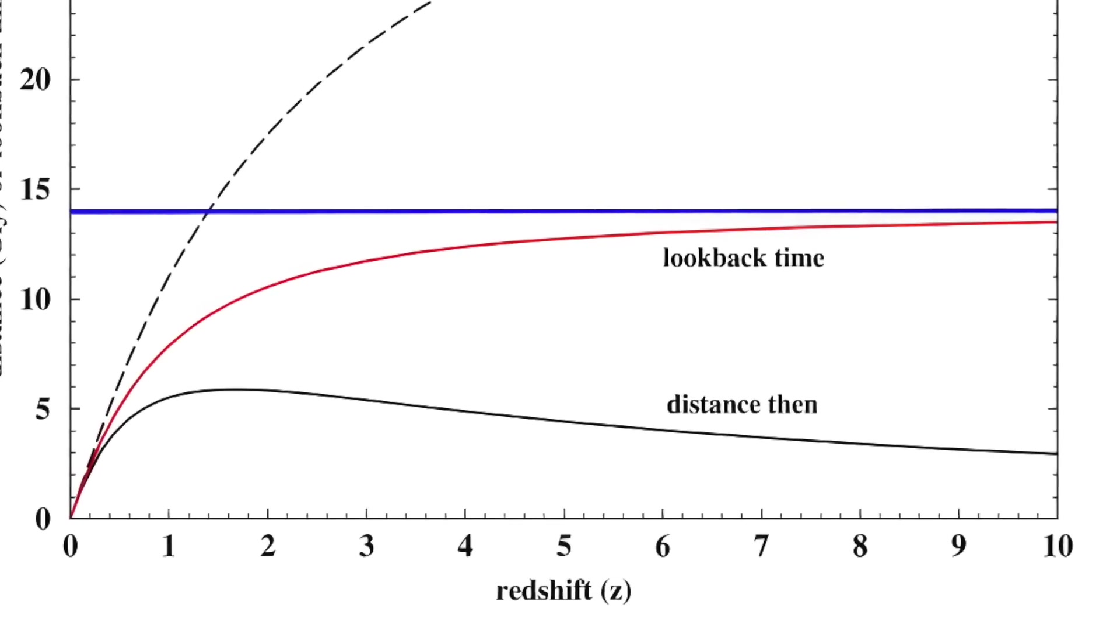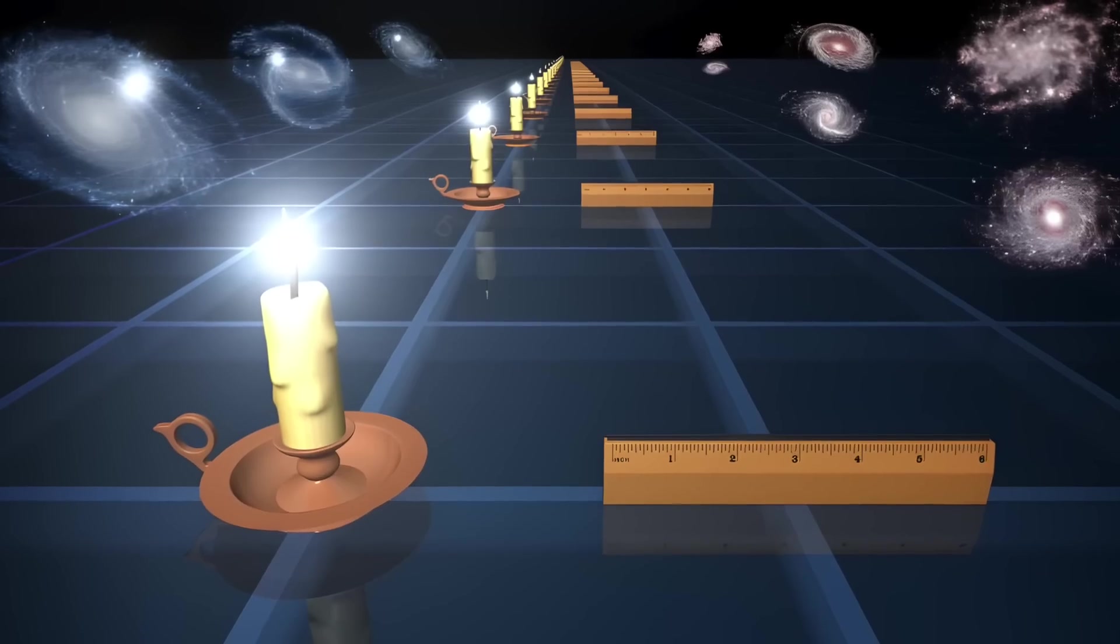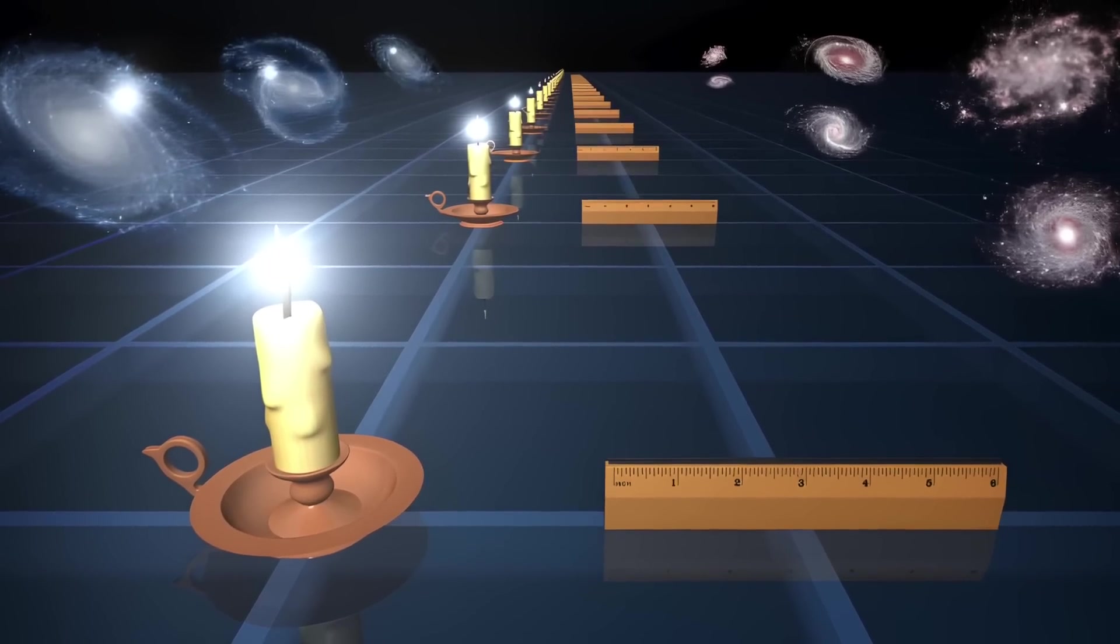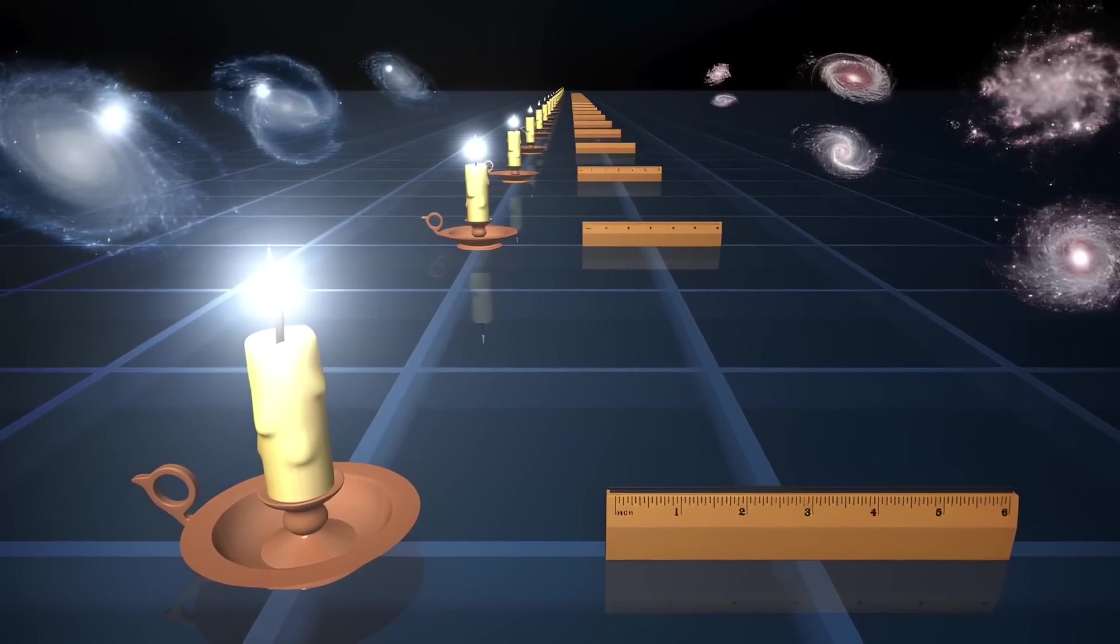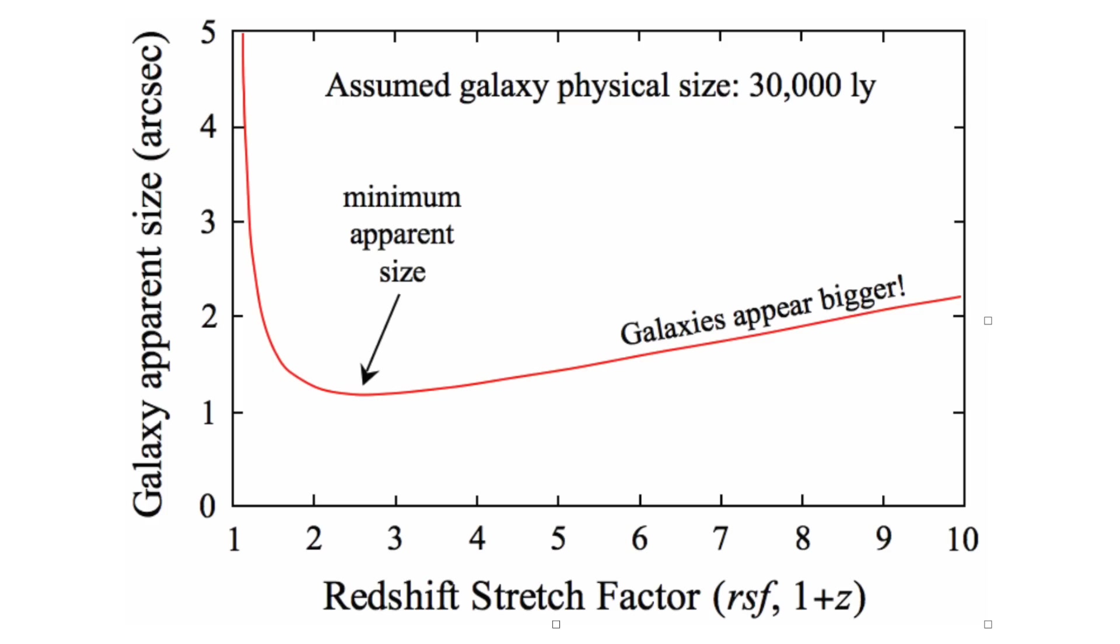In everyday life, we're used to the intuitive idea that the apparent size of objects, what astronomers refer to as their angular diameter, decreases as the distance to those objects increases. An object looks smaller as the distance of that object increases. In standard model cosmology, that relationship only holds until redshift reaches about z equals 2.